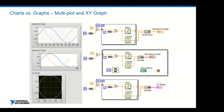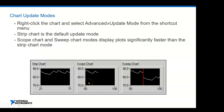Besides Chart vs Graph, there are other display types: Multi-Plot, XY Graph for different graph types depending on needs. For charts there are different update modes: Strip Chart (default, updates point by point), Scope Chart, and Sweep Chart - the Scope and Sweep charts display significantly faster than the Strip Chart.